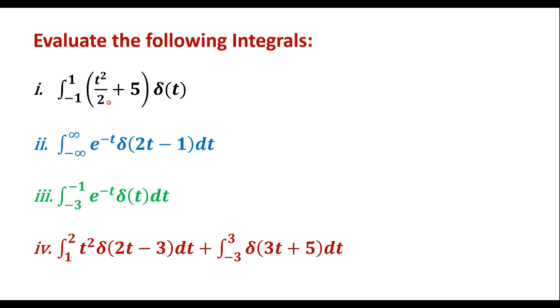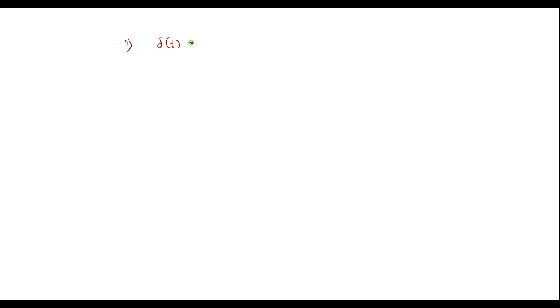Before solving these numericals, let me explain a few important properties of the delta function. We know that δ(t) is equal to 1 when t is equal to 0. It means that δ(t) is defined only at t = 0 and its value is 0 when t is not equal to 0.